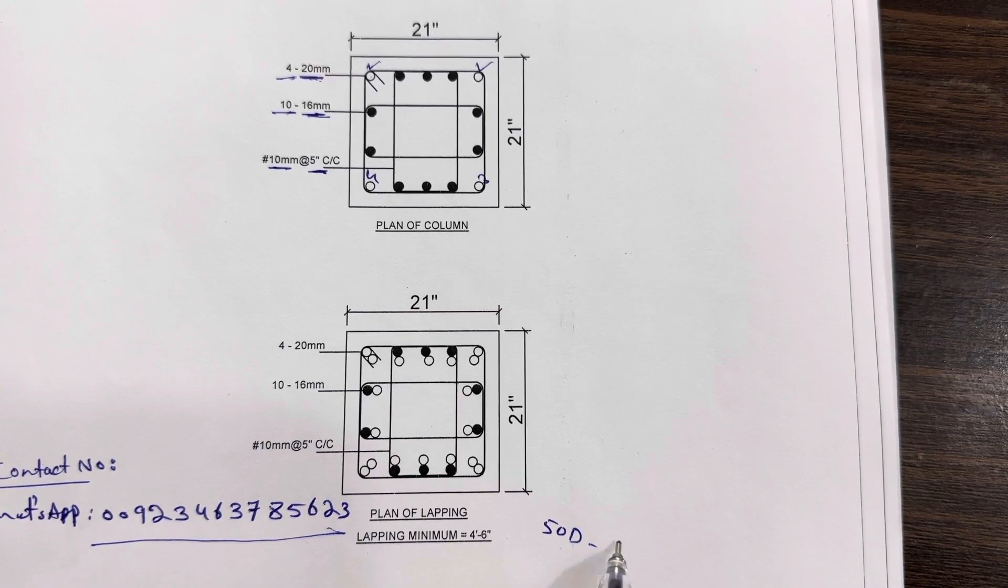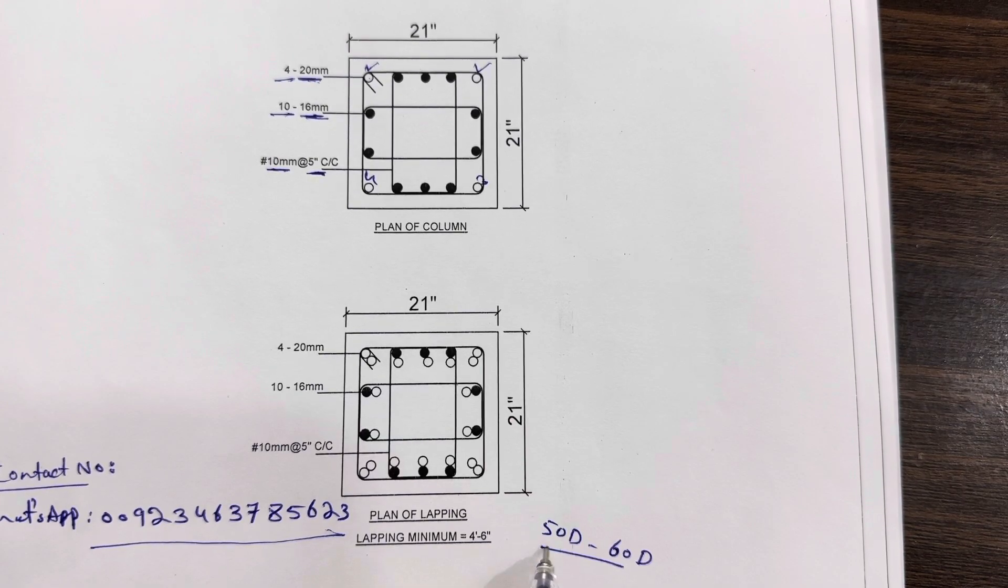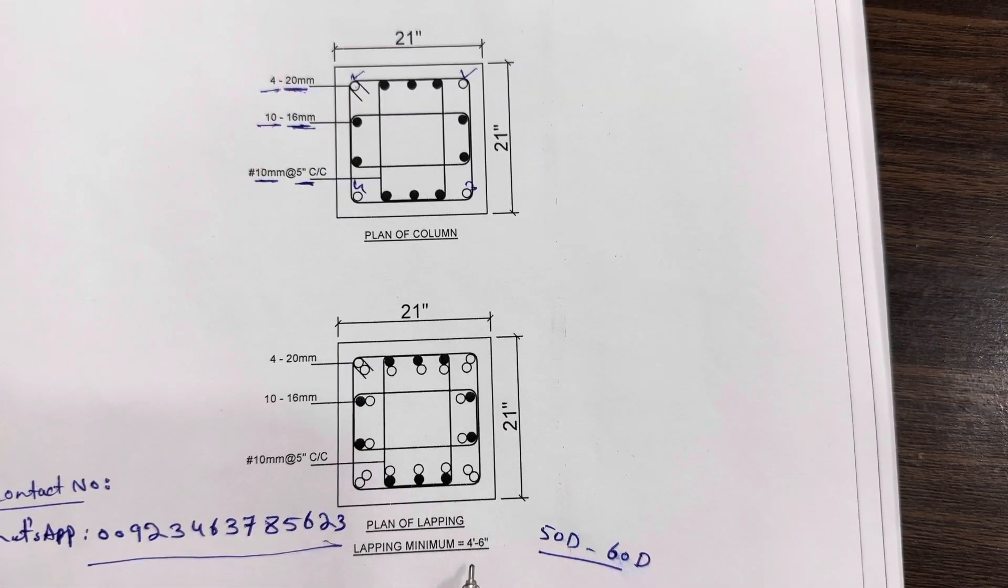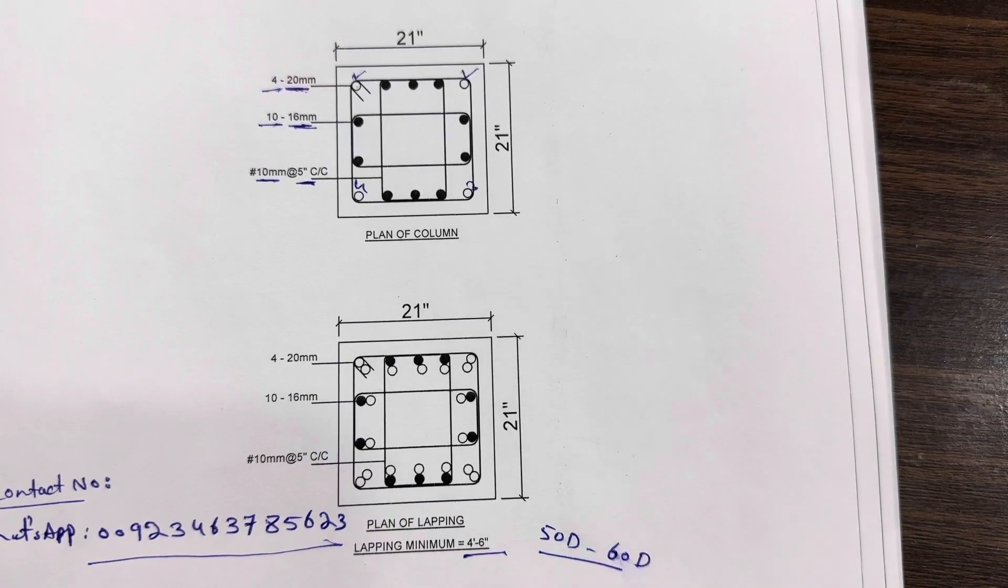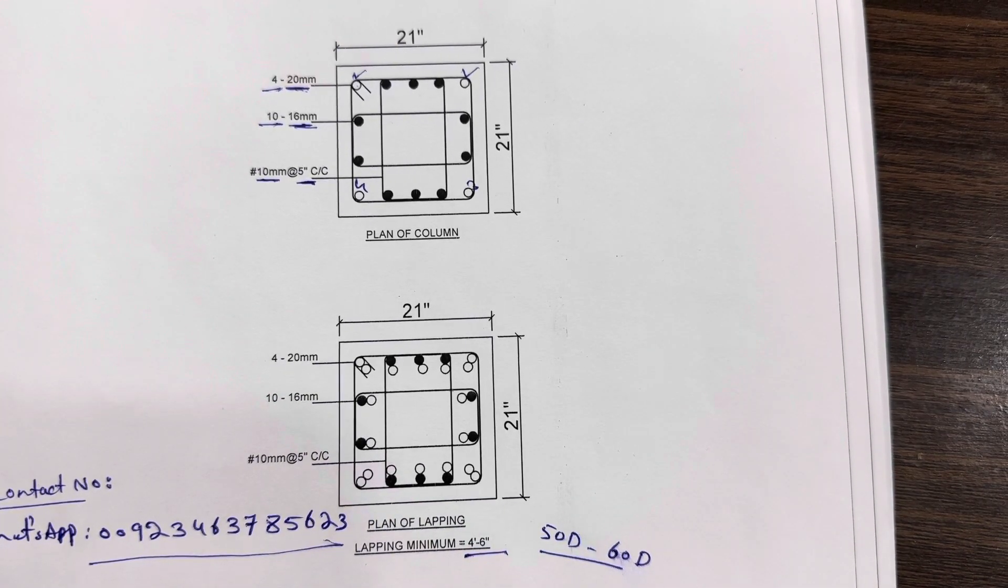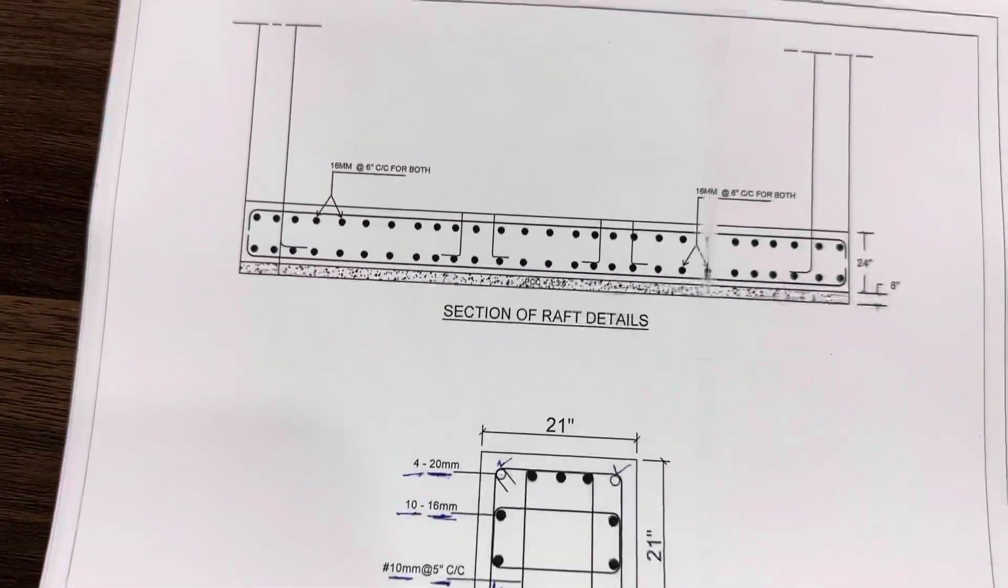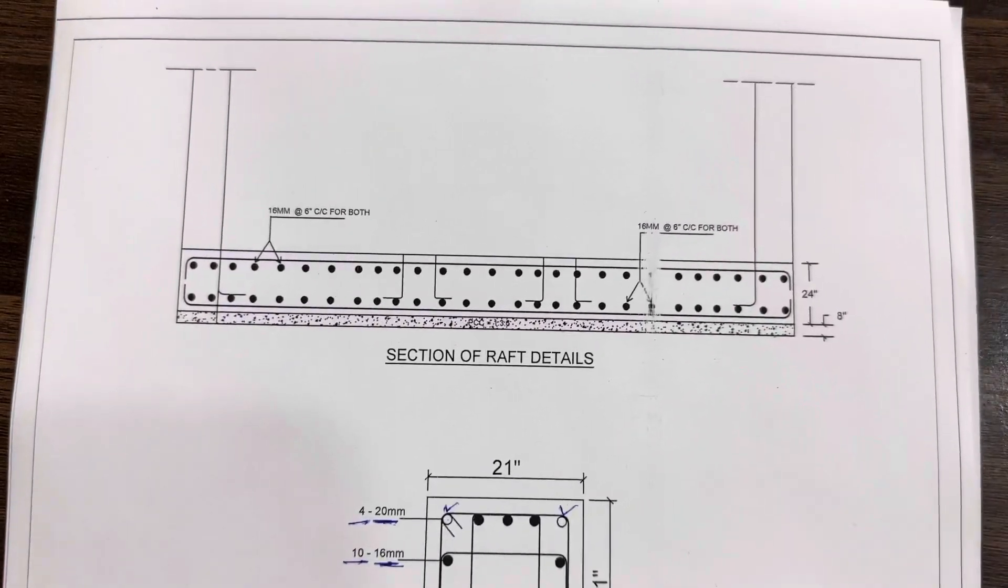50 to 60 d where d is dia of steel rod. If the dia is in millimeter or inches, you can use the same formula but it should not be less than 50 d. Therefore the minimum lapping length is four feet and six inches. Don't provide it at the critical point where we have lapping zone. We have three sections as I discussed in many videos.